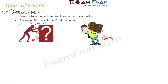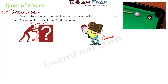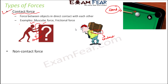Now look at an example where you do not have direct contact with the object, but contact through some other object. A ball is being touched through a rod — a person's hand is in contact with the rod, and the rod comes in contact with the ball. As soon as the person applies a force on the rod, the rod applies force on the ball and the ball starts moving. This is also a contact force because the hand is in contact with the ball through the rod.